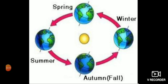You know we experience seasons on earth. What are the seasons that we experience? We experience summer, winter, spring and autumn. These are the four distinct seasons we experience on earth. How are these seasons caused? These seasons are caused because of the revolution of the earth.